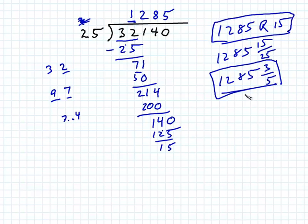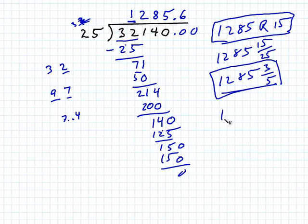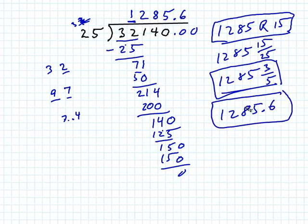The third approach: add a decimal point here and there, then add a zero and keep going. 25 into 150 — you know four 25s make 100 and two more make 50, so it's 6. 6 times 25: 6 times 5 is 30, carry 3; 6 times 2 is 12 plus 3 is 15. Comes out even. So the decimal answer is 1,285.6. Three different formats depending on your needs.